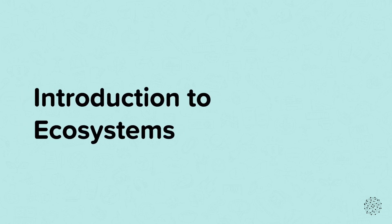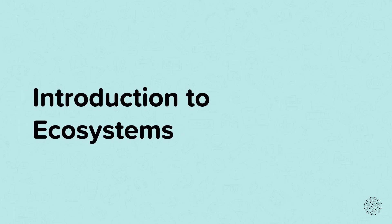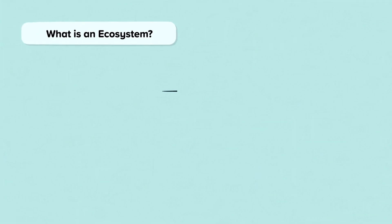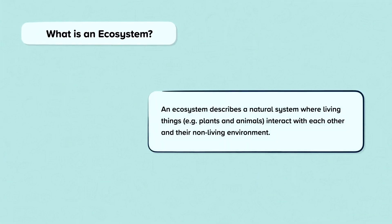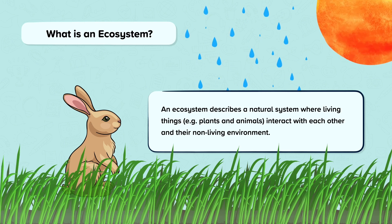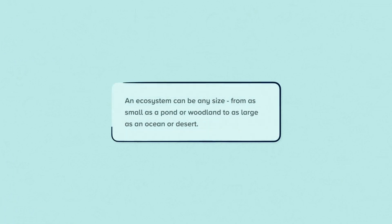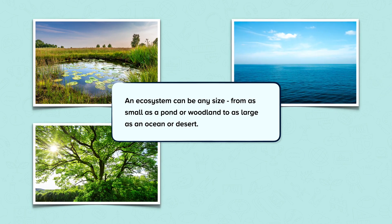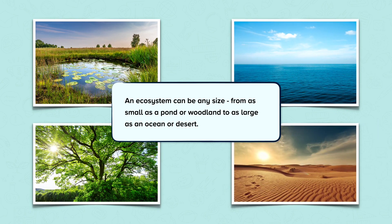This nugget gives an introduction to ecosystems. What is an ecosystem? An ecosystem describes a natural system where living things, for example plants and animals, interact with each other and their non-living environment. An ecosystem can be any size, from as small as a pond or a woodland to as large as an ocean or a desert.